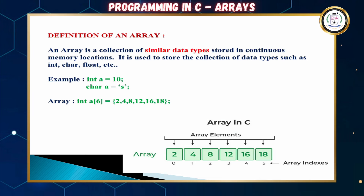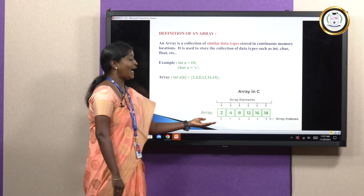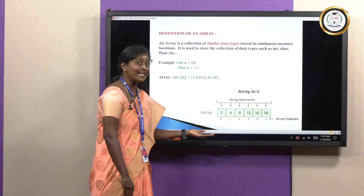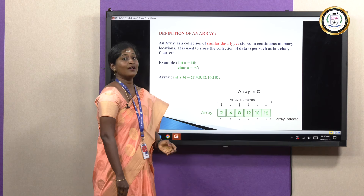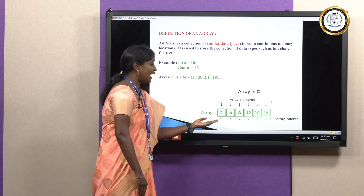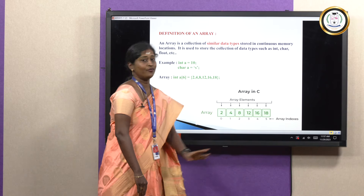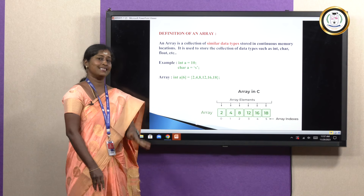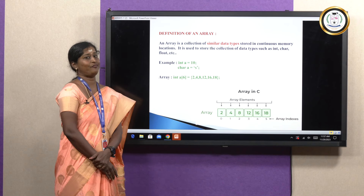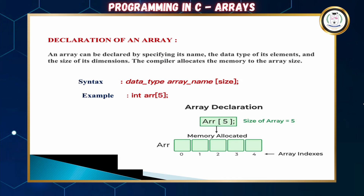The values 2, 4, 8, 12, 16, and 18 — 6 continuous values — are assigned to the variable, with index values always starting from 0 and going up to 5. The initialization and declaration of arrays will be explained in the following sections.